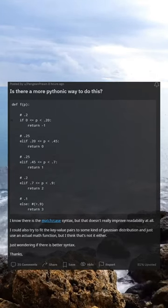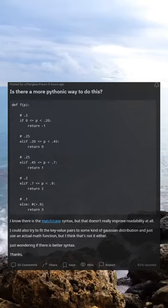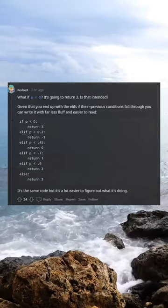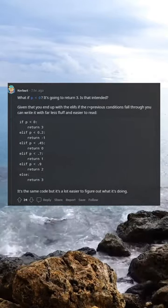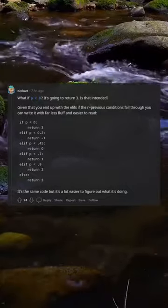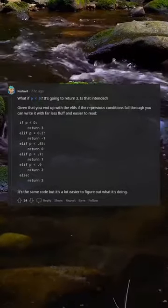Just wondering if there is better syntax. Thanks. What if p0 it's going to return 3 is that intended? Given that you end up with the alifs if the previous conditions fall through...